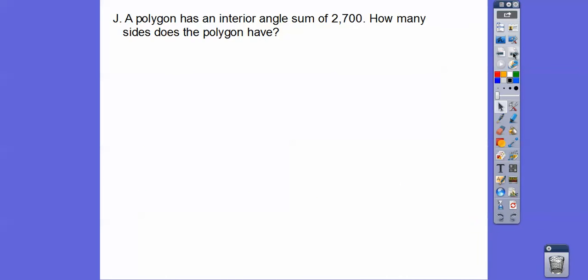Just a quick reminder. So a polygon has an interior angle sum of 2,700. How many sides does the polygon have? So we just do the n minus 2 times 180. Now this number is divisible by 180. You could distribute the 180 through, but it makes numbers smaller if we just divide right off the top by 180. So we get 15, add 2 to both sides, we get 17 sides.